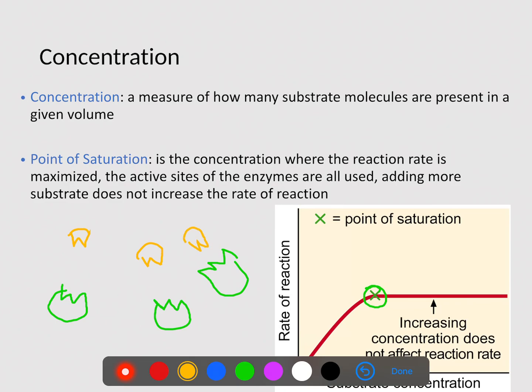So obviously, if I have three, it's going to work very rapidly. Each one's going to find one. But if I start to increase the amount of substrate that we have here, eventually, we're going to reach a point where these enzymes aren't going to be able to break these down fast enough. And they're only going to break them down fast enough as much as the chemical reaction can occur. So again, the point of saturation is the concentration where the reaction rate is maximized. The active sites of the enzymes are all used. Adding more substrate does not increase the rate of reaction. So in other words, there's not enough sites for the chemical reaction to occur.